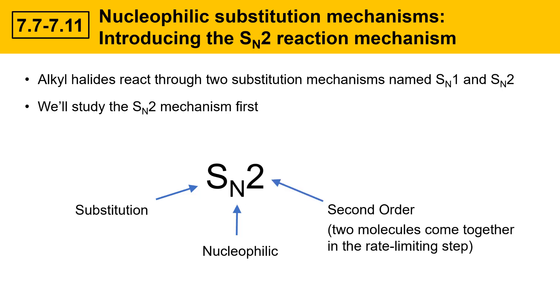The two means second order. It doesn't mean two steps. It's actually a single step mechanism, the SN2 reaction. So two molecules come together in the rate limiting step. Bimolecular is what the two stands for.